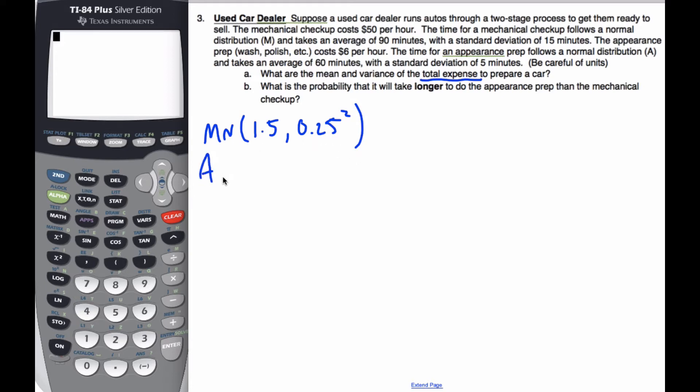Similarly, my appearance will be 60 minutes, which is 1 hour, and 5 minutes, which is 5 out of, 1 out of 12, squared is the variance.